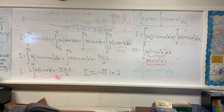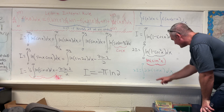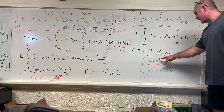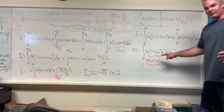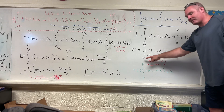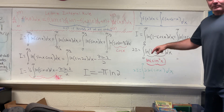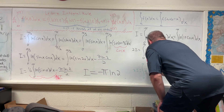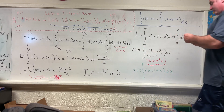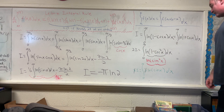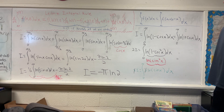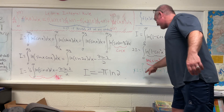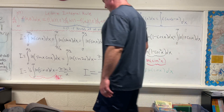So we get that 2I is equal to the integral from zero to pi of 2 times the natural log of sin x, by using the log exponent property to bring the exponent outside. The two on the left and the two on the right cancel, leaving us simply with I equal to the integral from zero to pi of the natural log of sin x dx.